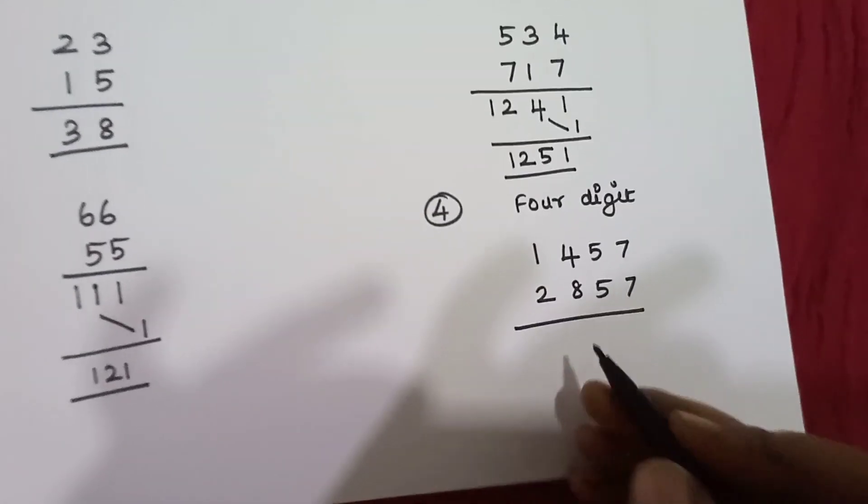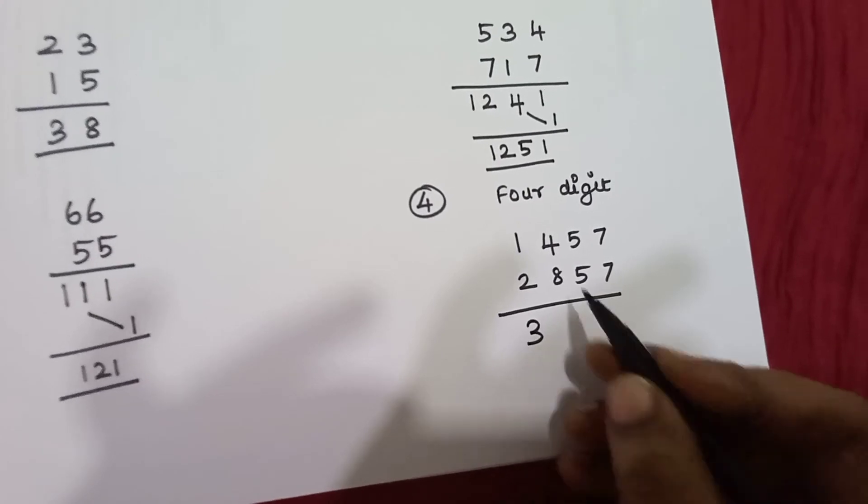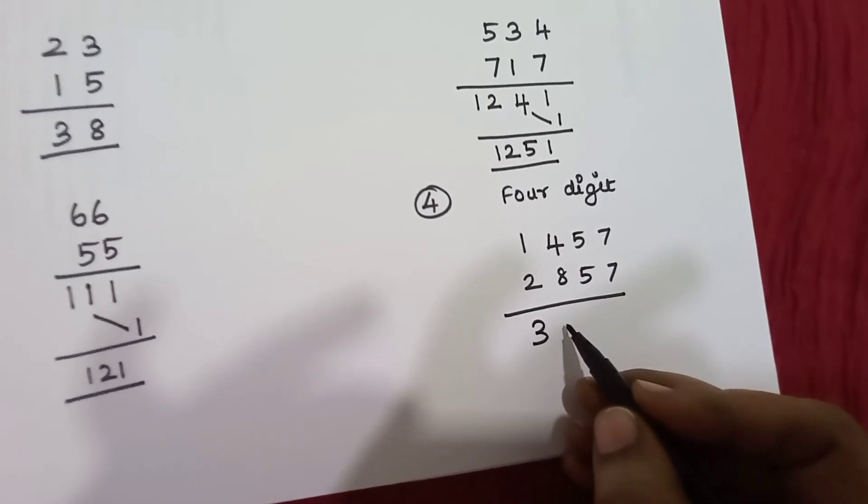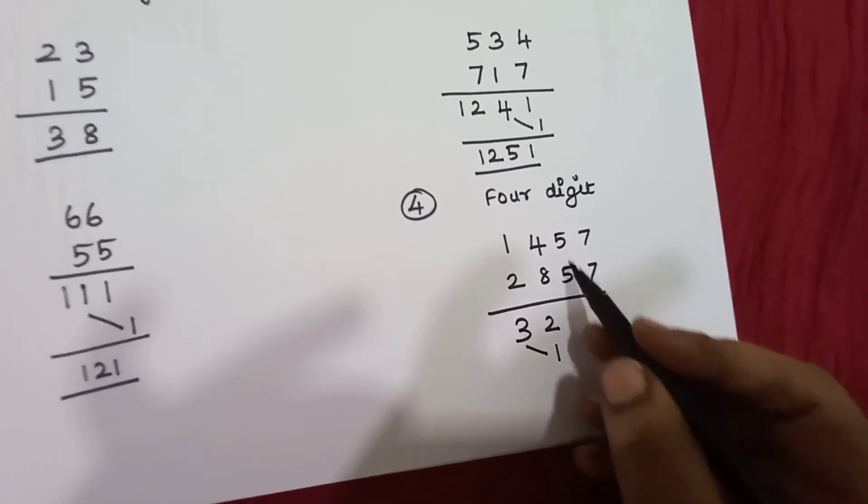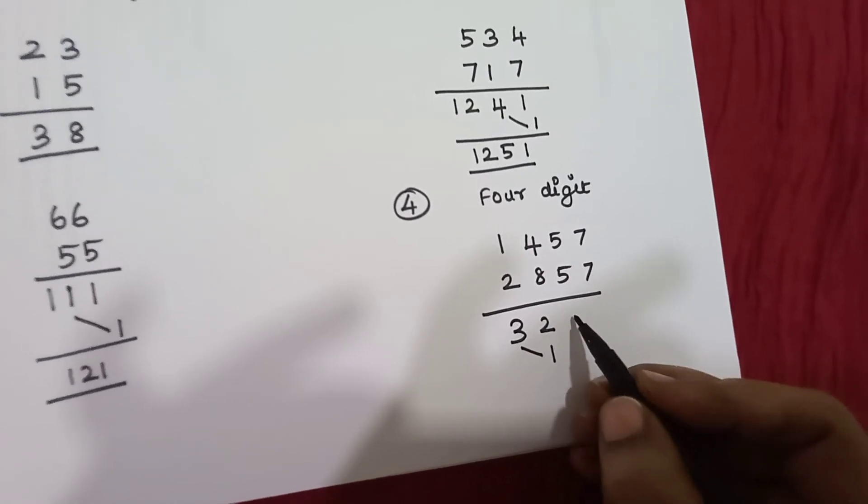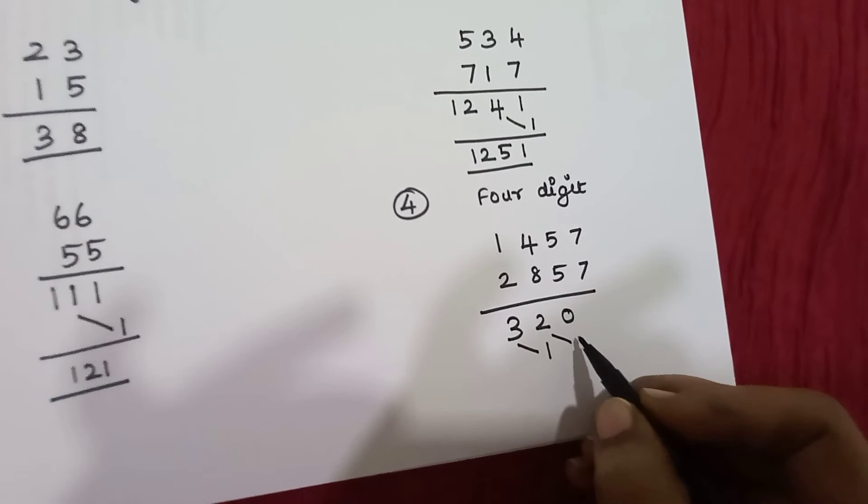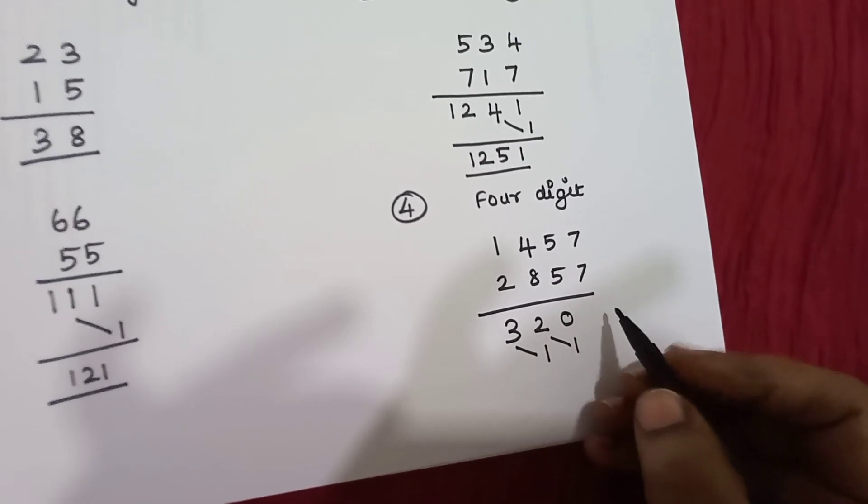Four-digit number: 3, 12, add 1. 5 plus 5, 10, 0 add 1. 7 plus 7, 14.